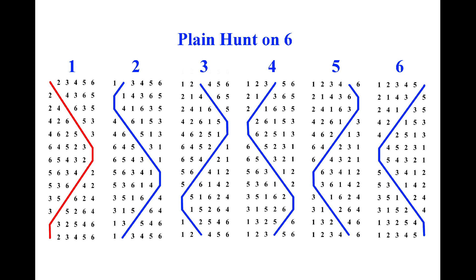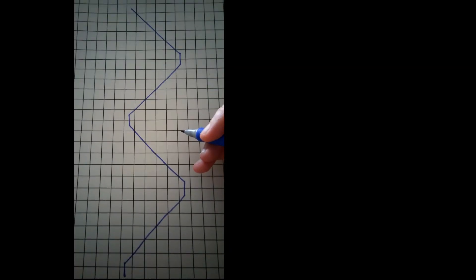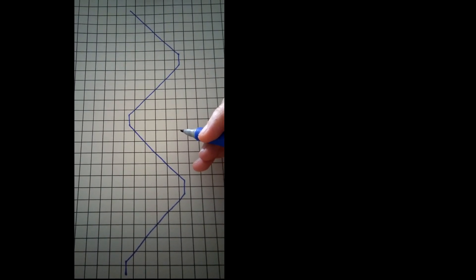In this video I'm going to talk about the structure of plain hunt and introduce the idea of place notation. Compare the diagrams for all six bells. Notice that in plain hunt all the bells do the same thing. They all hunt up to the back, lie, hunt down to the front, lead and repeat. They're all doing the same thing but they start from a different point. Here I've drawn the diagram for plain hunt twice as if for the treble bell, but this pattern applies to all the bells.